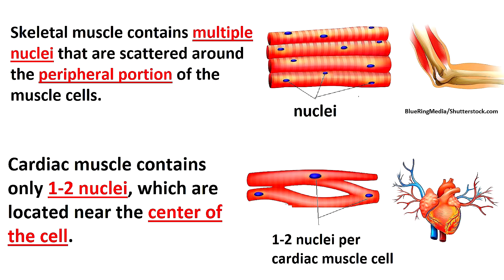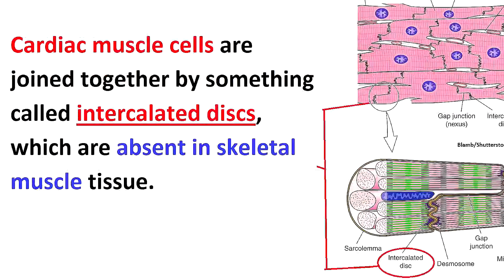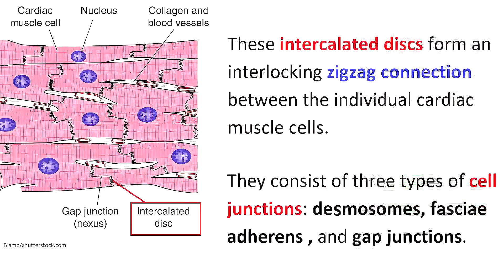Another difference is that skeletal muscle contains multiple nuclei scattered around the peripheral portion of the muscle cells, whereas cardiac muscle contains only one or two nuclei, which are located near the center of the cell. An important characteristic of cardiac muscle cells is that they are joined together by intercalated discs, which are absent in skeletal muscle tissue. These intercalated discs form an interlocking zigzag connection between individual cardiac muscle cells and consist of three types of cell junctions: desmosomes, fascia adherens, and gap junctions.